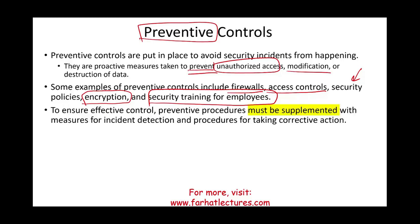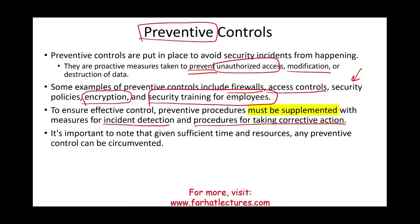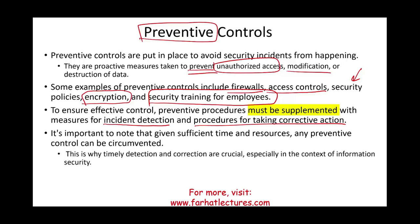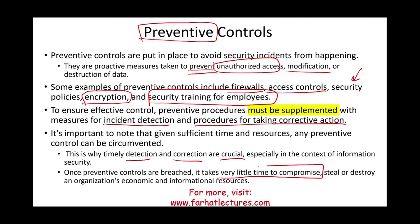To ensure effective control, preventive procedures must be supplemented with measures for incident detection and procedures for corrective action. This is because any system, given sufficient time and resources, can be penetrated. If you give someone enough time and resources, someone will access your system. This is why detective and corrective controls are crucial, especially in the context of information systems — preventive controls are good, but someone can always eventually get to your system.